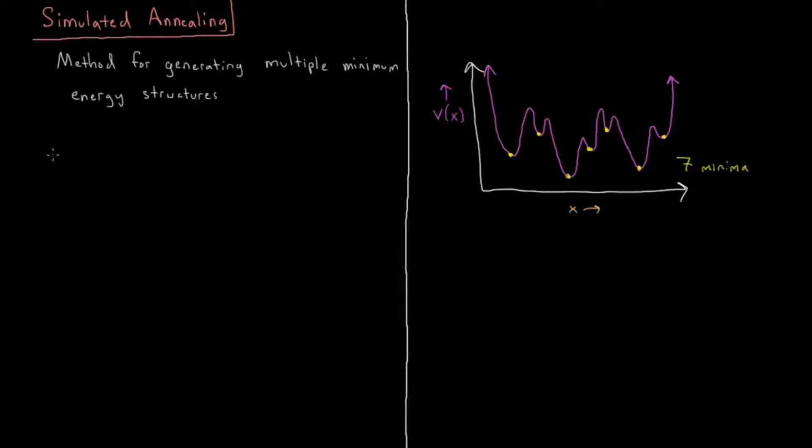So that's noteworthy in all of these cases: steepest descent, conjugate gradient, Newton-Raphson, rational function optimization. All of these cases have that similar kind of problem, is that they do local minima only.